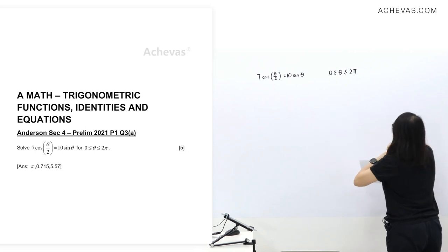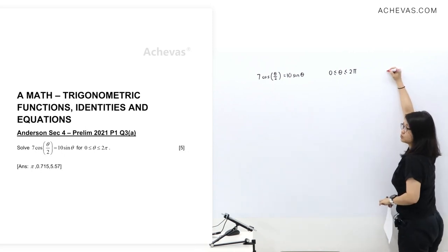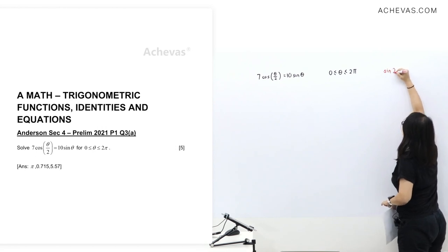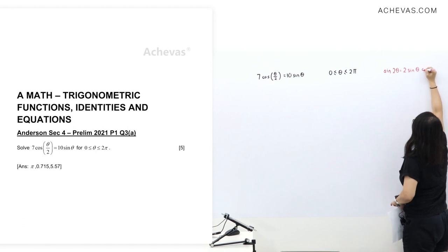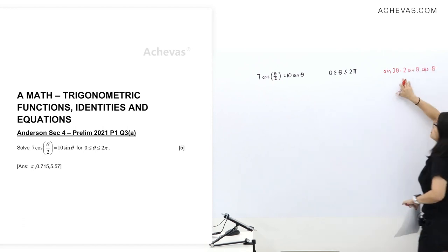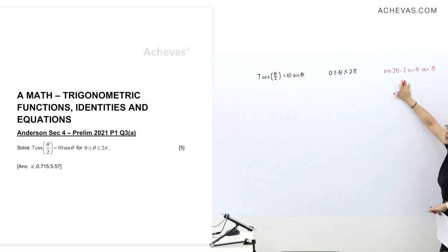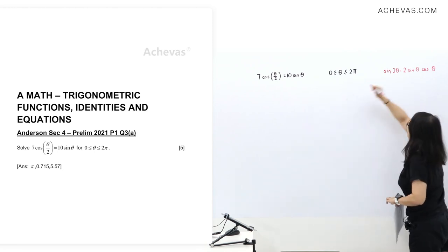Notice that although we call it double angle formula, you can apply to any angle. Let me write what people are familiar with. Sine 2 theta equals 2 sine theta cos theta. Everybody is very familiar with this one. I need to change this instead.